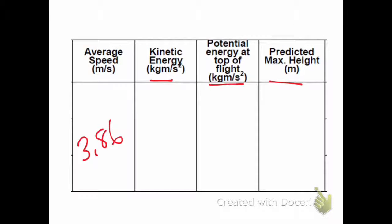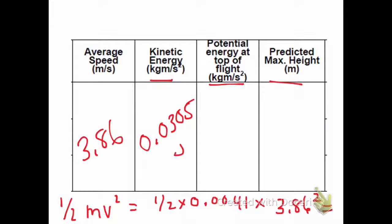So this is a little bit trickier. To calculate kinetic energy, you're going to do one-half mass times velocity squared. The mass of the marble is 0.0041 kilograms. You're going to multiply that by the velocity, 3.86, don't forget to square it, and that will give you the kinetic energy, which is 0.0305 joules.